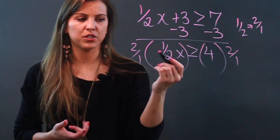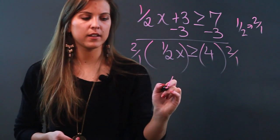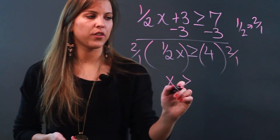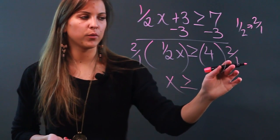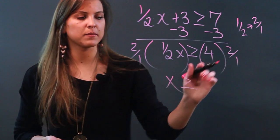2 over 1 times 1 over 2 is 1, so that just becomes 1X, which is just X, is greater than or equal to 4 times 2 over 1. Well that's just 2, so 4 times 2 is 8.